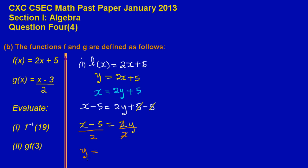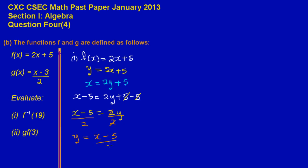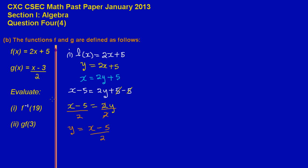Therefore y is equal to x minus 5 all upon 2. But remember we were asked to find the inverse of f of x, so in the last step we replace y with f inverse of x. So f inverse of x is equal to x minus 5 all upon 2. And that's how you find the inverse of a function.